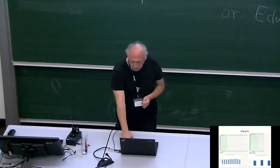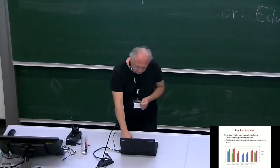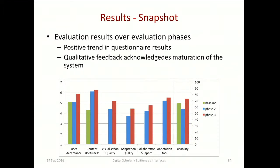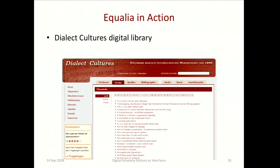Automatic reports are provided by Equalia. We had results for each of the quality dimensions I presented: use acceptance, content usefulness, visualization quality, and so on. The different colors represent different phases: a baseline evaluation before the start of the project with a baseline system, then phase two was the formative evaluation, and phase three was the summative evaluation. We can see that the ratings of the final system were higher than during the development phase.